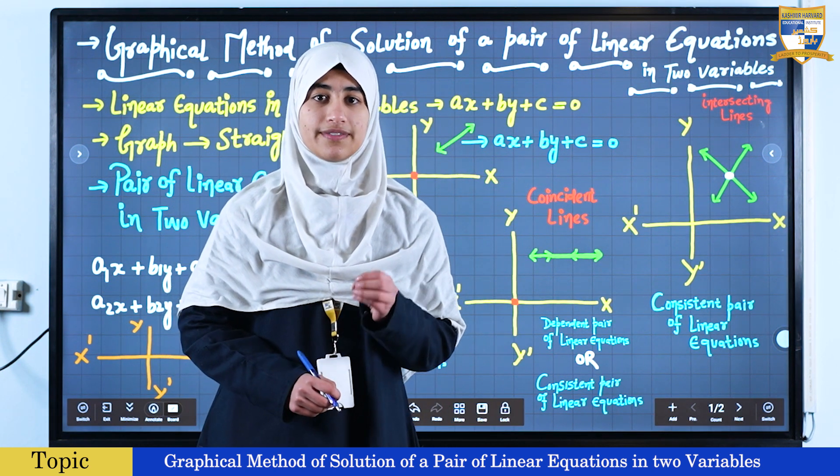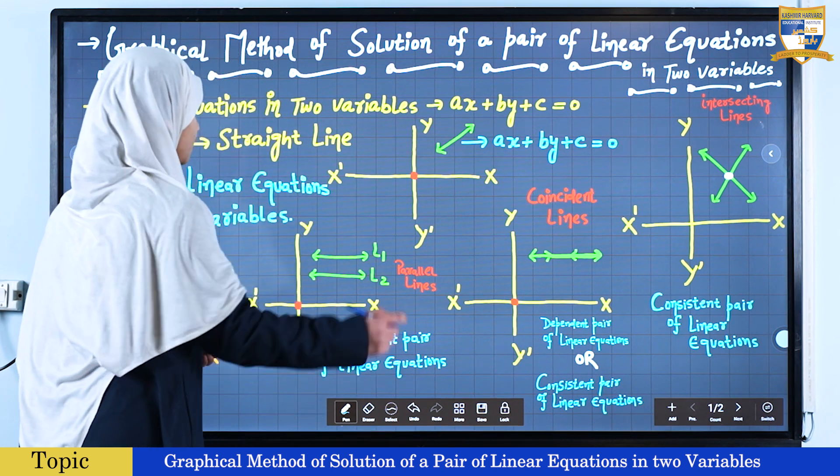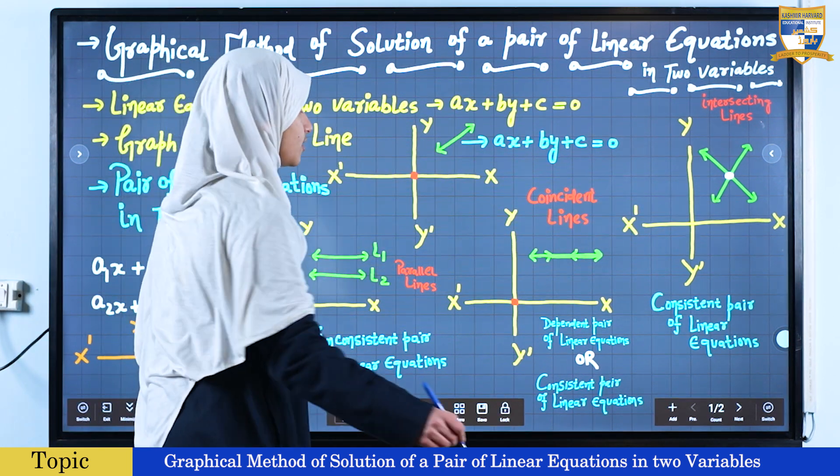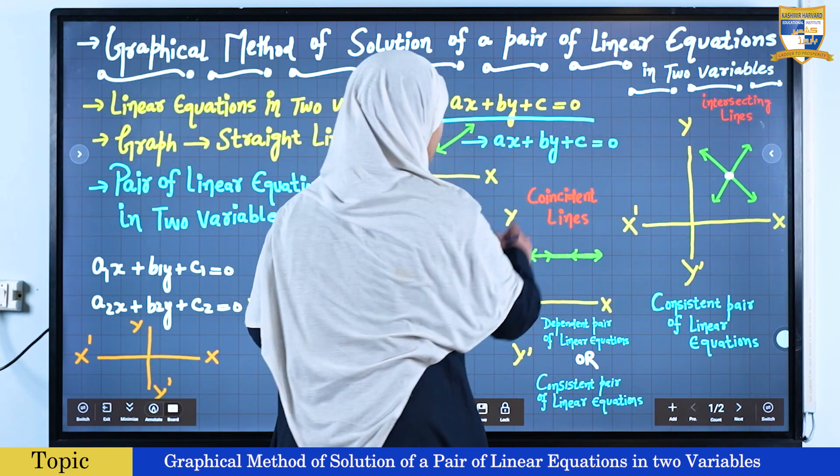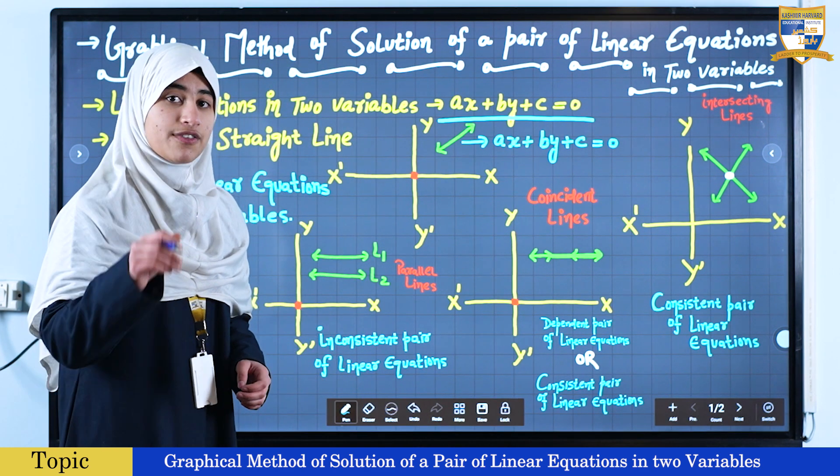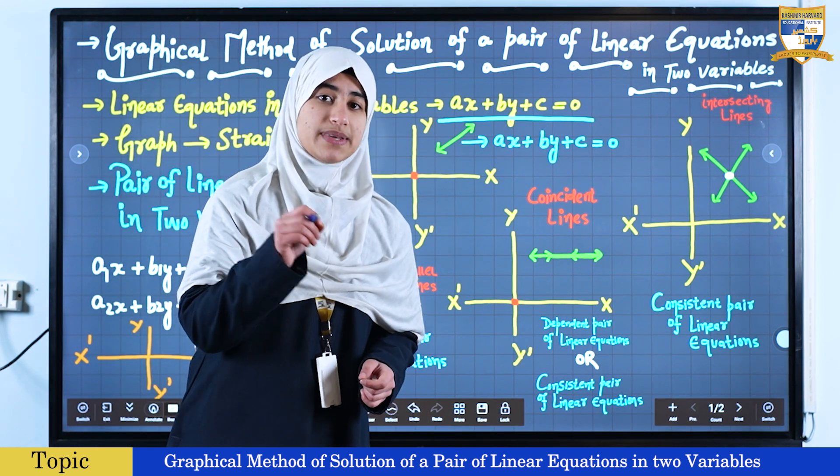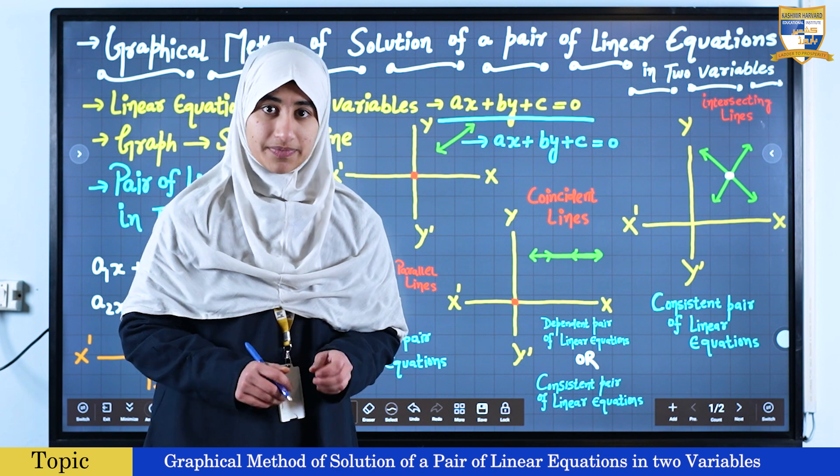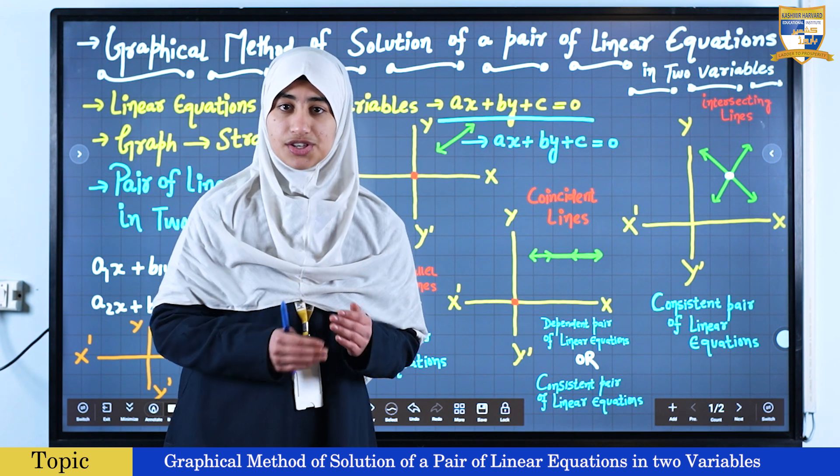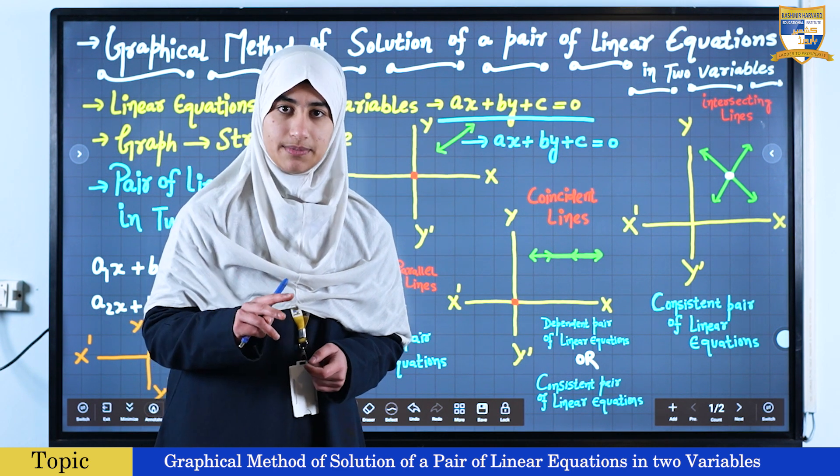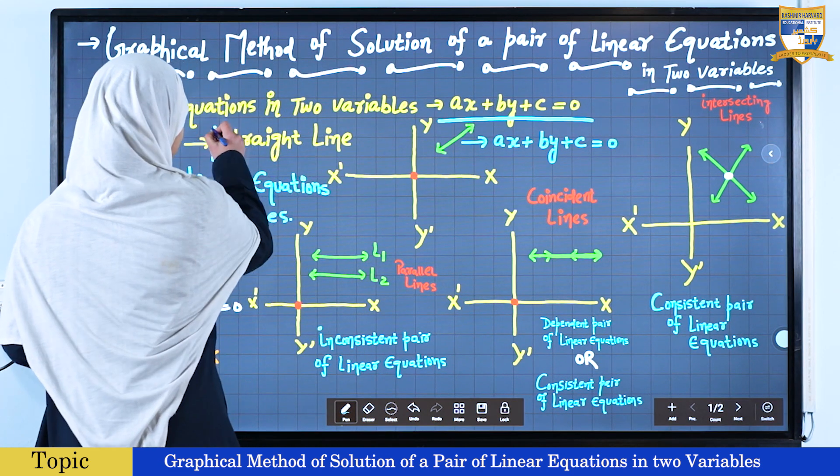First and foremost, we should be aware that a linear equation in two variables is represented in the form ax plus by plus c equals zero, where a squared plus b squared is not equal to zero, and the graphical representation of linear equation in two variables is a straight line.